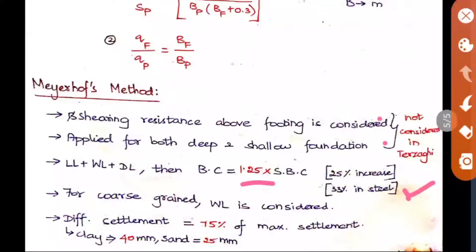To compare and study, I have written that statement here also. For coarse grain, the wind load should be considered. Therefore, it is again the same point: live load, wind load, and dead load should be considered for the coarse grain soil. Then comes the differential settlement.